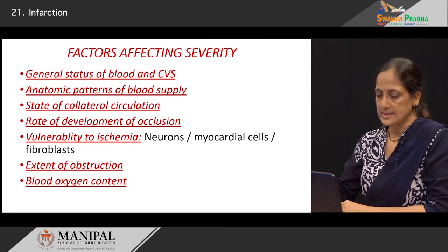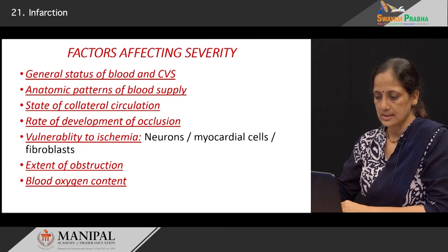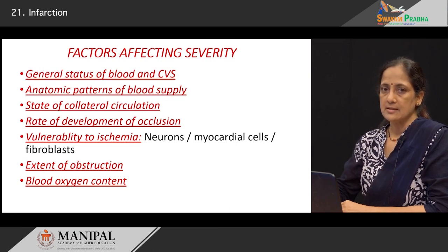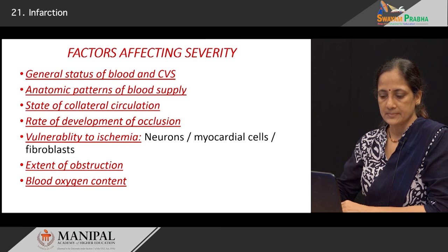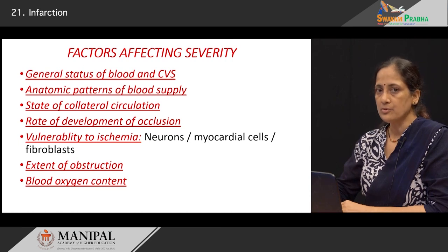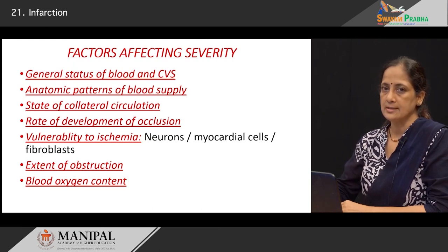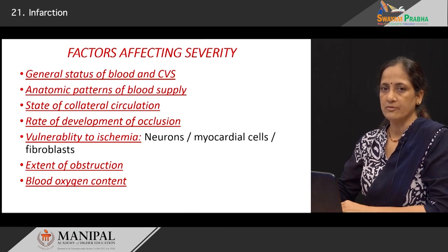The vulnerability of the tissue to ischemia is also a factor. Neurons and myocardial cells are highly prone to ischemic necrosis, so the type of tissue subjected to hypoxia matters. The extent of obstruction in a vessel also determines the degree of infarction. A small obstruction in a small vessel means only a small infarct results; however, occlusion of a larger vessel would mean a larger area of tissue or even an entire organ undergoing infarction. The blood oxygen content also determines infarction, as hypoxic states would result in easier development of infarction in the tissue.